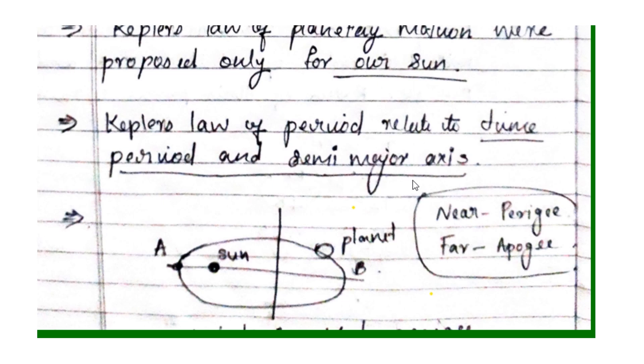From Kepler's third law, T-squared is directly proportional to R-cubed, where T is the time period and R is the semi-major axis.